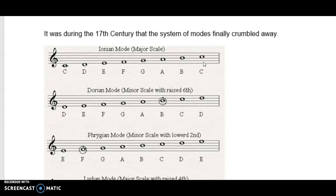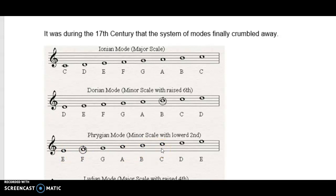In the Renaissance, they took exactly the notes of the Ionian mode and just started the next mode on the second note. So: D, E, F, G, A, B, C, D — and that means my 3–4 half tone moves to between 2 and 3, and my 7–8 half tone moves to between 6 and 7. That's not a scale we're used to. The friction starts with that half tone, and now the half tone is between scale degrees 5 and 6.